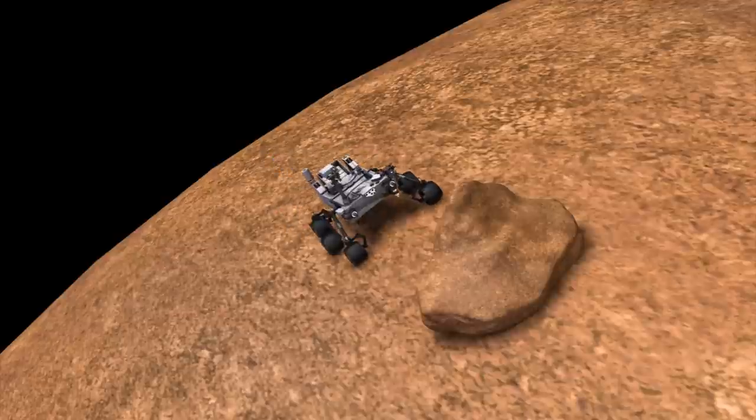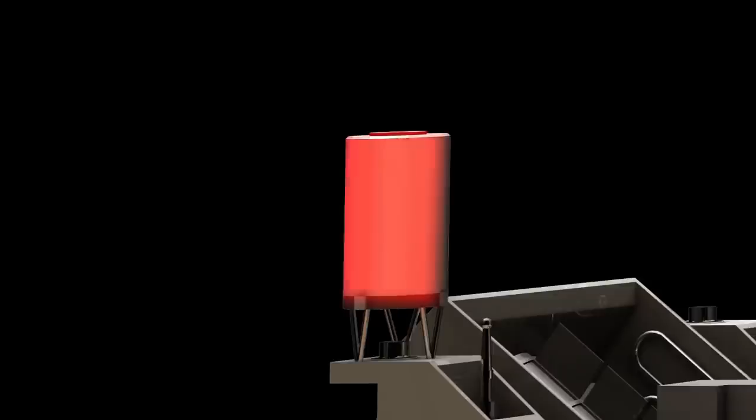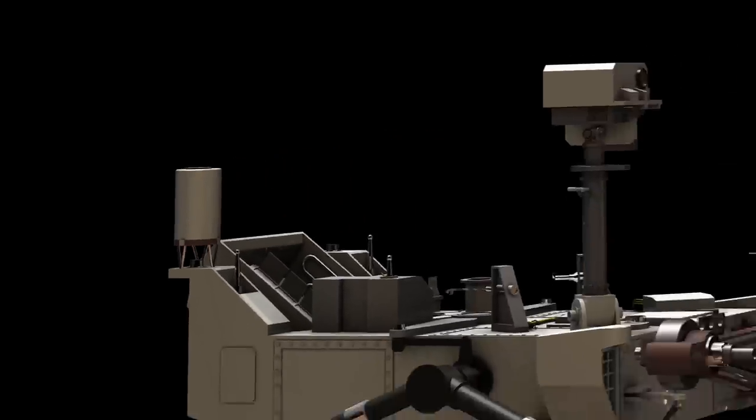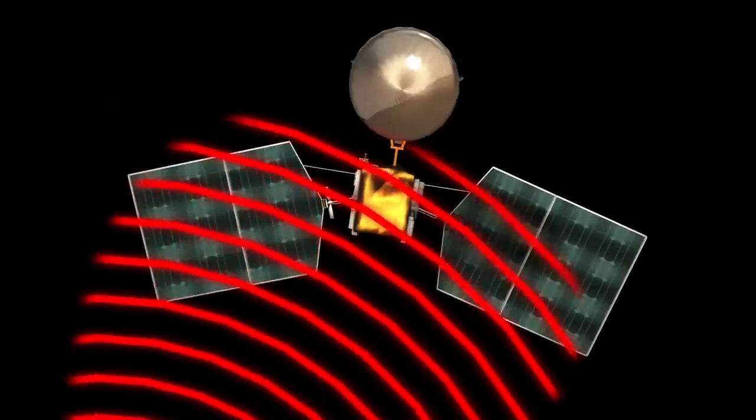Information and images gathered by Curiosity during its Mars mission are sent at speeds of 256 kilobits per second, around five times faster than a dial-up modem, to one of two Mars orbiters.